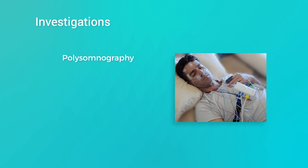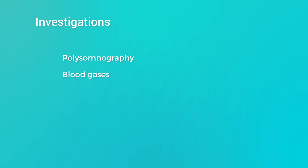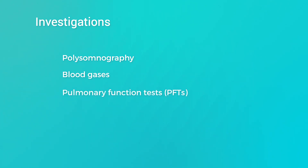Sleep studies remain the mainstay investigation here as well. These are used to differentiate between obstructive sleep apnea hypopnea syndrome, central sleep apnea, and nocturnal hypoventilation. Blood gases can demonstrate the presence of type 2 respiratory failure, and pulmonary function tests can assess ventilatory muscle strength. History and examination will often reveal the underlying cause for CSA or hypoventilation, but further targeted investigations may be necessary.